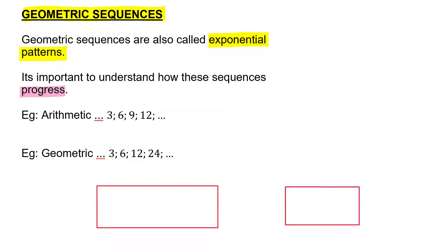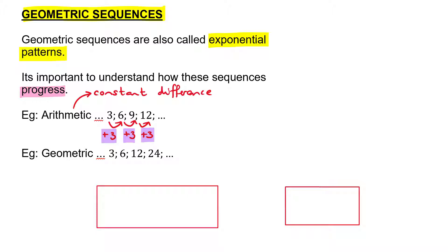For an arithmetic sequence, the way we got from one term to the next was because of a constant difference. Looking at the pattern 3, 6, 9, 12 — from 3 to 6 we're adding 3, from 6 to 9 we're adding 3 again. But if you look at the pattern below — 3, 6, 12, 24 — we're no longer adding; we're multiplying by 2 every time. That basically summarizes what a geometric sequence is: instead of adding, we multiply to get from one term to the next.